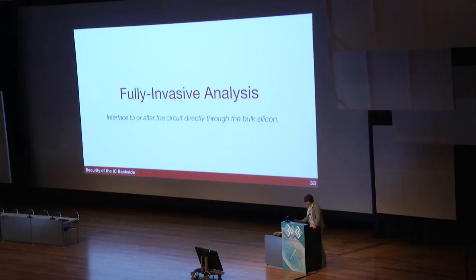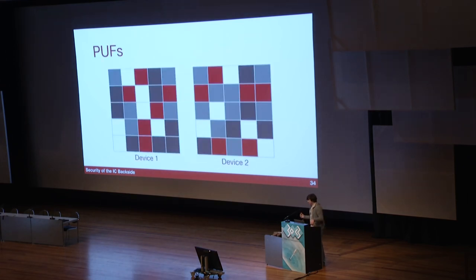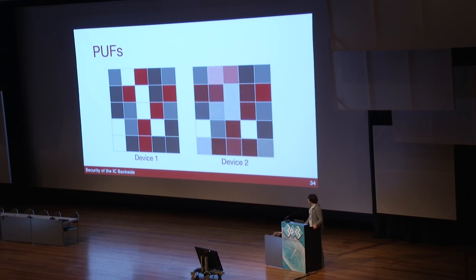Jetzt zu vollständig invasiven Analysen. Wir wollen wirklich den Schaltkreis aufmachen und reingucken. Wir haben den PUF weitergemacht und sagten: wir möchten eine physikalisch unklonbare Funktion klonen. Wir haben sie ausgelesen, wussten die Daten und wollten dann eine zweite Instanz nehmen.